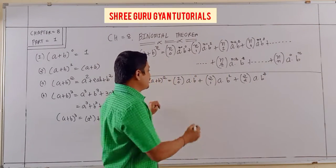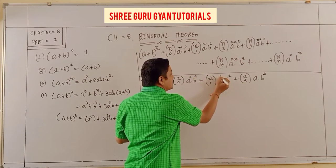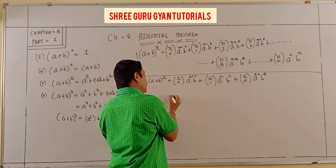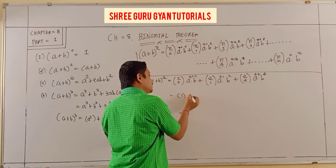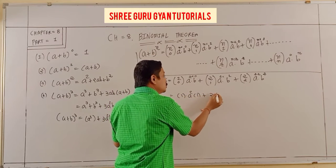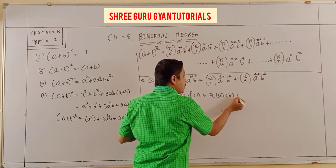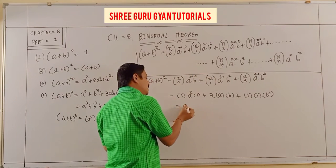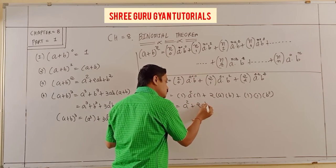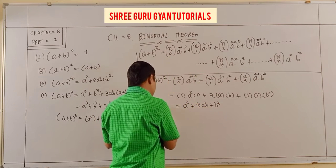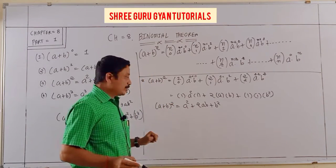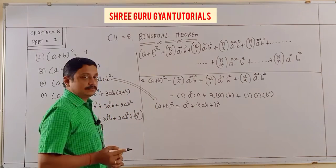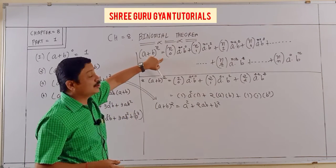Subtraction: 2 minus 0, here 2 minus 1, and here 2 minus 2. So my answer is finally: 2C0 is 1, a squared times 1, then 2C1 is 2 times a times b, and 1 times b squared. So finally we can get a squared plus 2ab plus b squared. So that is by using the Binomial Theorem property.